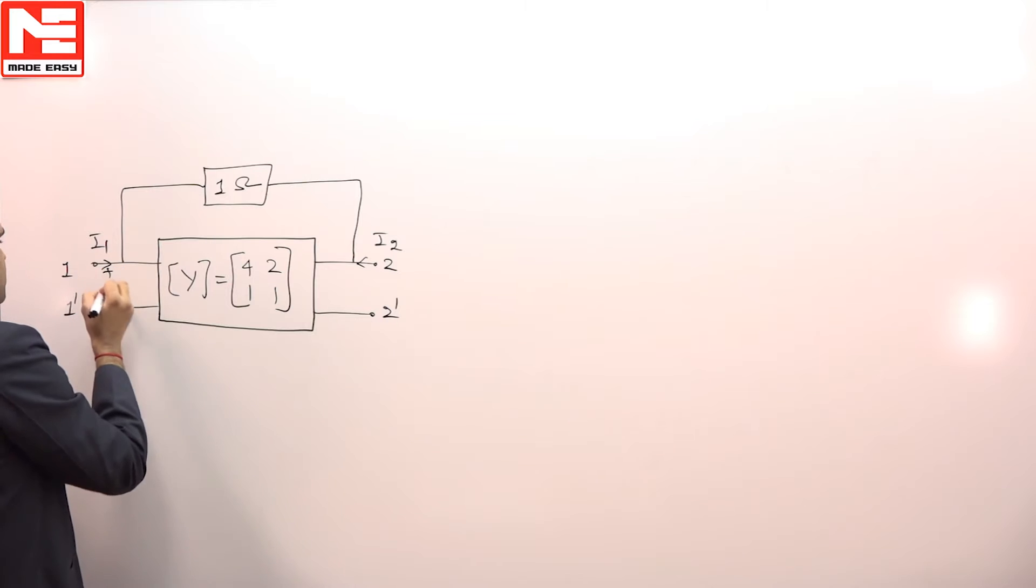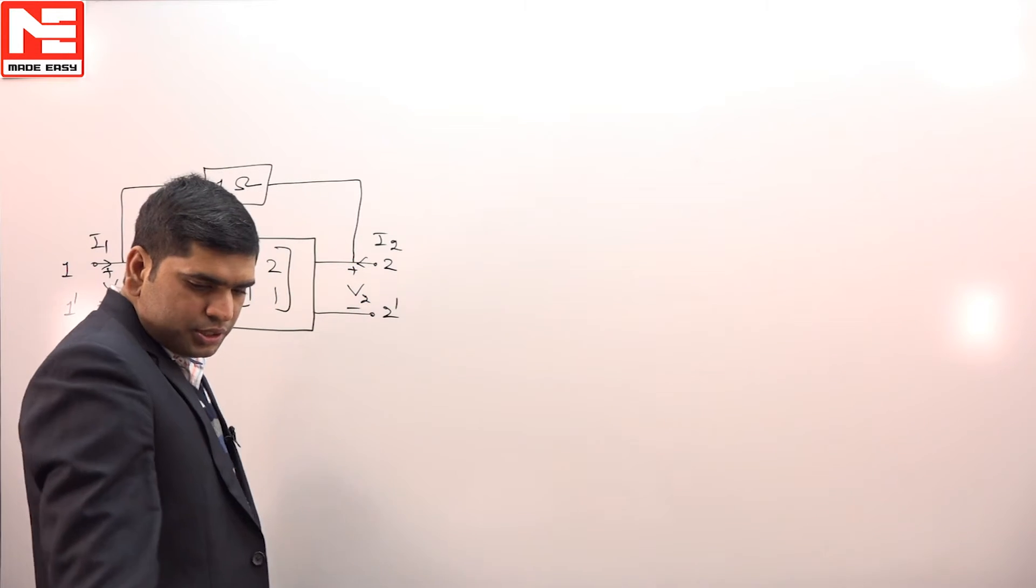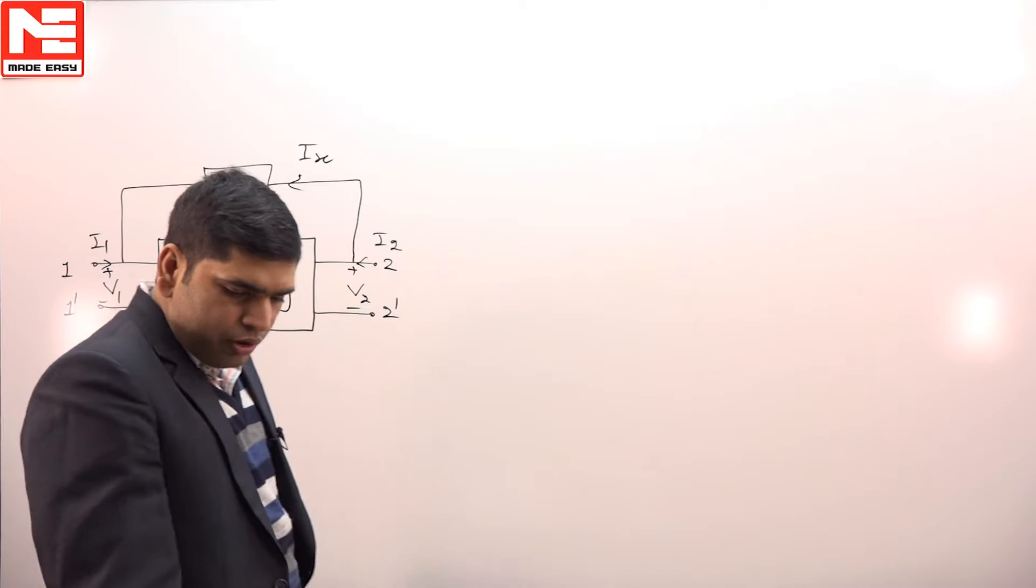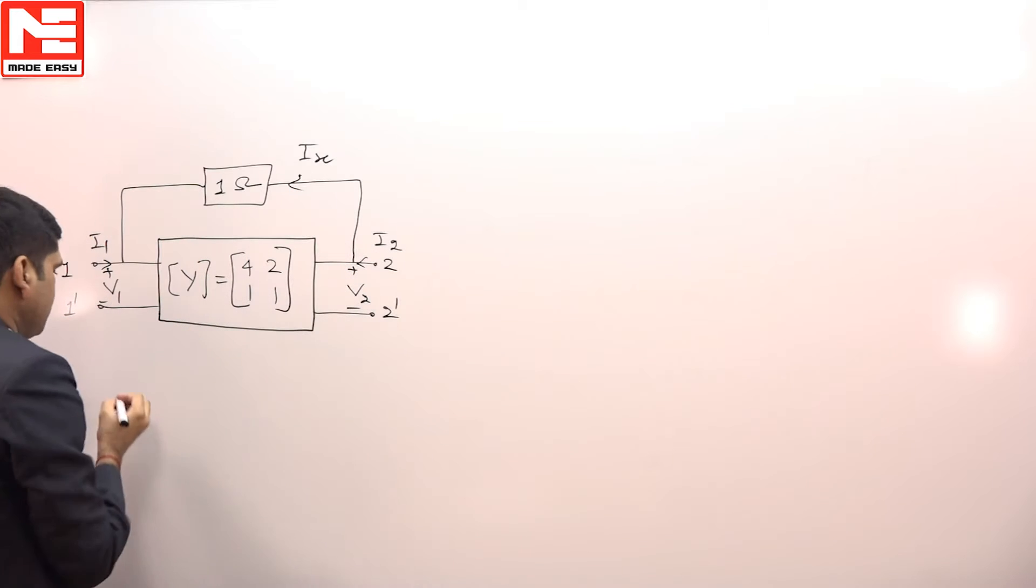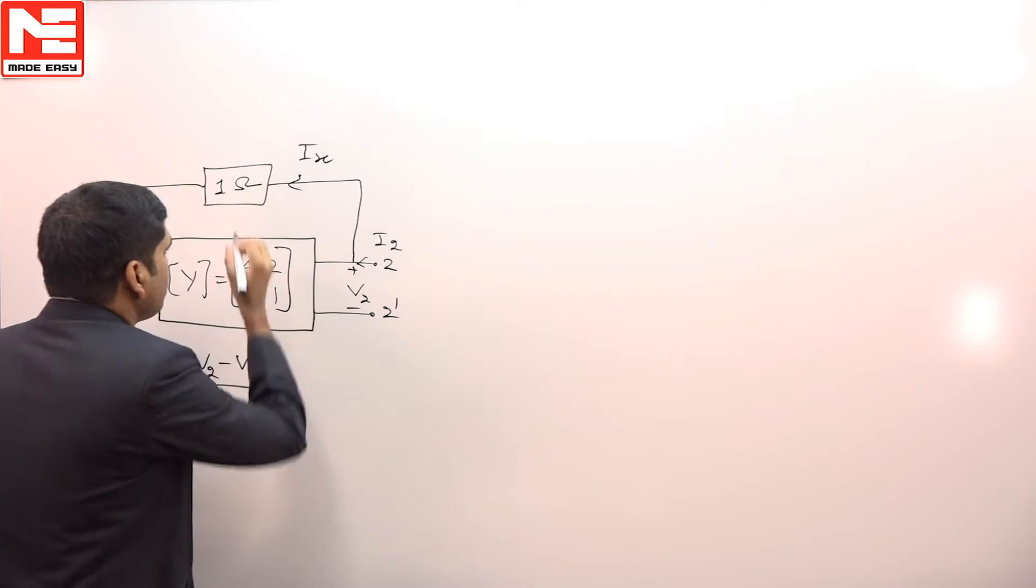This voltage is V1 and this voltage is V2. Let us assume the current in this branch is ix. Now if we calculate ix, ix can be written as ix equals V2 minus V1 divided by this one ohm resistance, so V2 minus V1. This is equation number one.